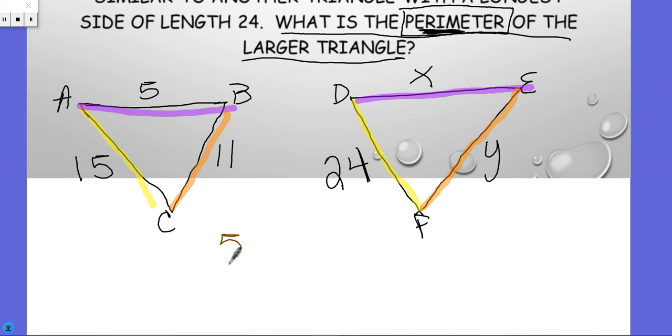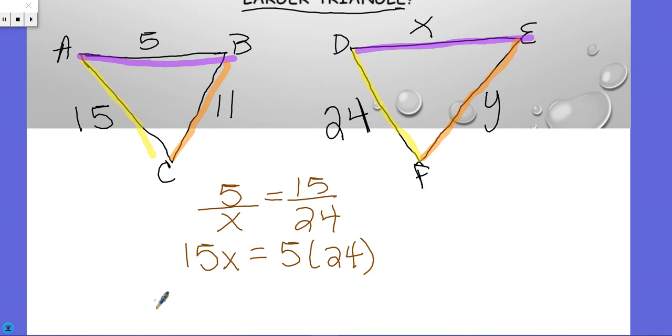5 over x equals 15 over 24, and so we get 15x equals 5 times 24. Let me see, we get 100 plus 20, so that's going to be 120. 15x equals 120.